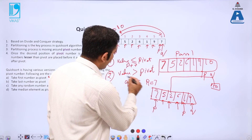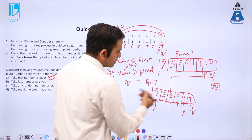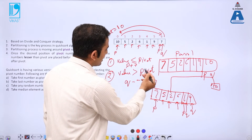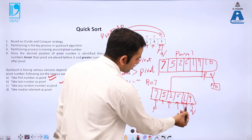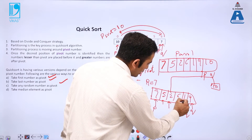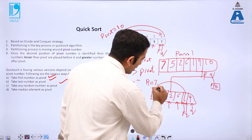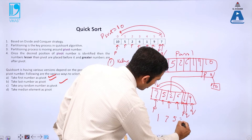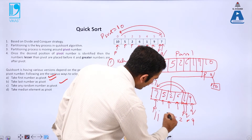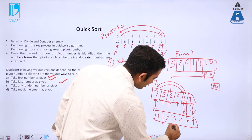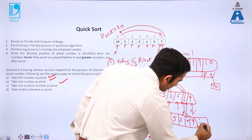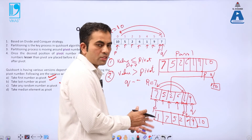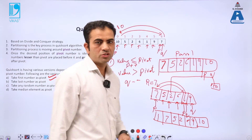Now check q: 9 is greater than or equal to pivot 7, so q decrements — q moves back one position. Then 1 is not greater than pivot, so q stops. Now we swap the element at position q with the pivot element 7. The new array becomes: 1, 7, 5, 2, 6, 9, 10. Both 7 and 10 are now in sorted positions. This process continues for the remaining sub-arrays.